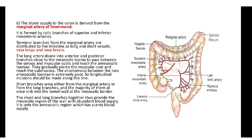The blood supply to the colon is derived from the marginal artery, formed by colic branches of the superior and inferior mesenteric arteries. Terminal branches from the marginal artery are distributed as long vessels (vasa longa) and short vessels (vasa brevia). The long arteries divide into anterior and posterior branches near the mesocolic taenia, passing between the serous and muscular coats to reach the antimesenteric taenia. The anastomosis between the two antimesenteric taeniae is extremely poor, so longitudinal incisions should be made along this line. Short branches arise from the marginal artery or from the long branches, sinking into the bowel wall at the mesocolic border, providing the mesocolic region with abundant blood supply.